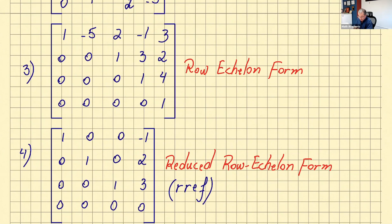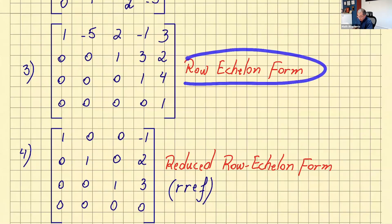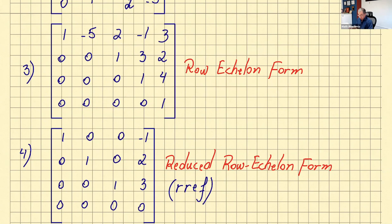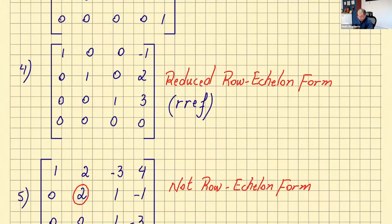Example three: no rows entirely of zeros. Checking leading ones — we have a leading one here, and the next leading one is to the right of it, and so on. So this is row echelon form. Is it reduced row echelon form? Right away we see it's not, because there is a two above one of the leading ones, which is not zero.